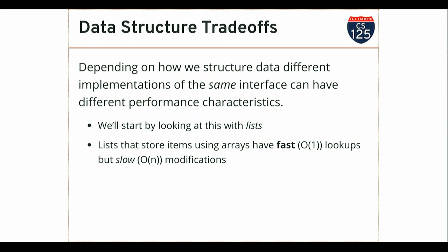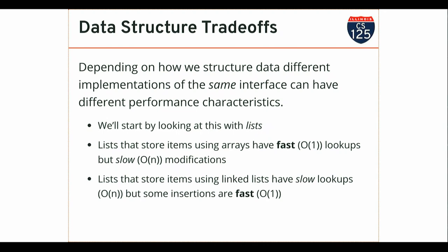So we're going to talk about lists. The fundamental trade-off: lists that use an array to store values — the ones you've been working on so far — have fast lookups. I can get and set items extremely quickly. But if I want to modify the list, if I want to insert or remove items, those operations are slow. In contrast, there's another way of implementing a list that uses objects internally to link things together. That version has slow lookups, but there are certain types of modifications that we can do extremely quickly. Both also present different memory usage trade-offs.